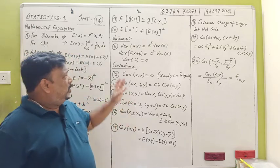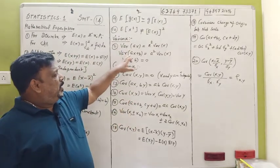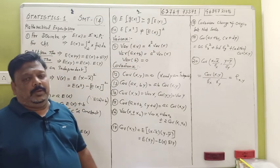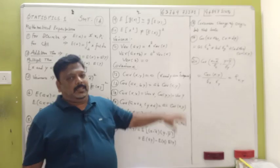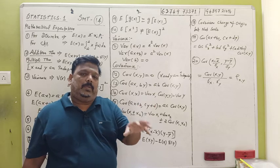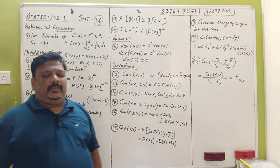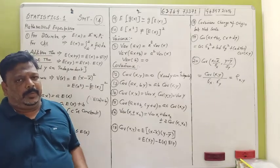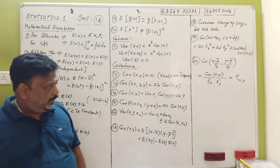You can see the variance of 2X + 3. We have to apply the formula: the variance of 2X + 3 equals 2² times the variance of X, which is 4 · Var(X). The constant 3 disappears. It is very simple.